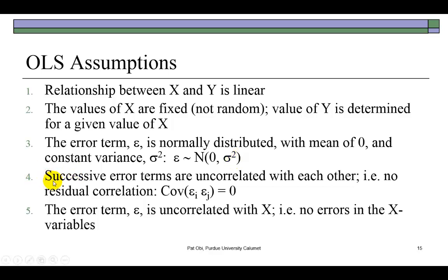Number four is that successive error terms are uncorrelated with each other, so that we don't have any information flow from one error term to the other, because if there is information flow, then we cannot say that they are random. Finally, the error term is uncorrelated with the values of X, so that we do not have errors in the independent variables.